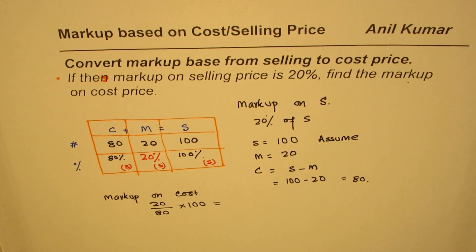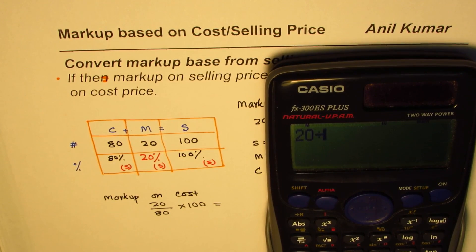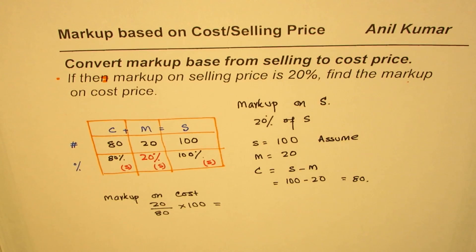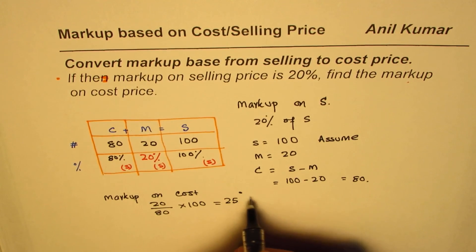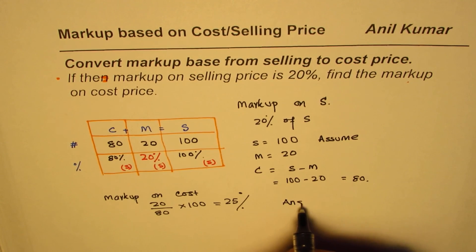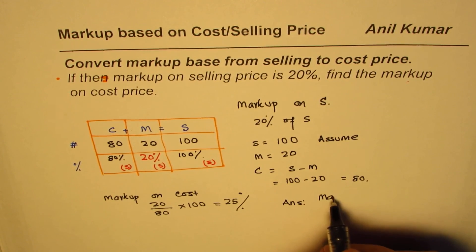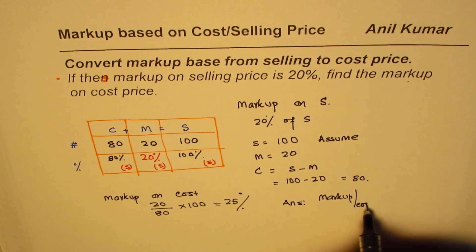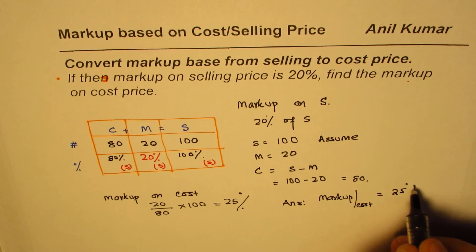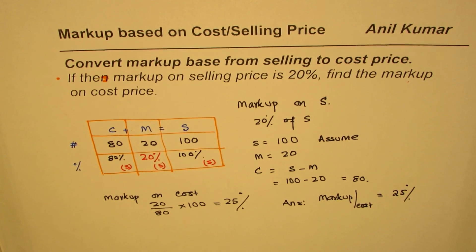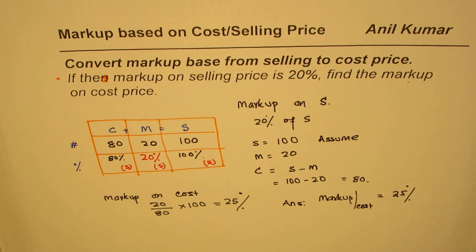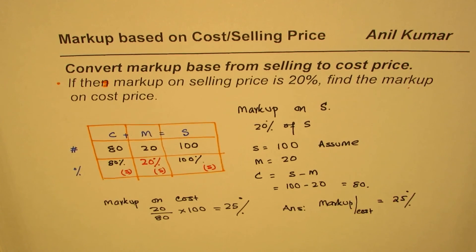So it is 20 divided by 80, times 100, which equals 25%. Our answer is: markup based on cost equals 25%. That is how we relate the markup from sales to cost. I'm Anil Kumar — you can subscribe and share my videos. I hope they are helpful for you. Thank you and all the best.